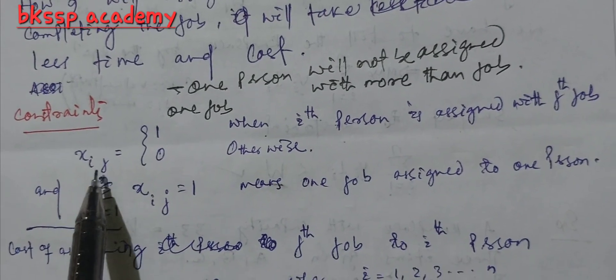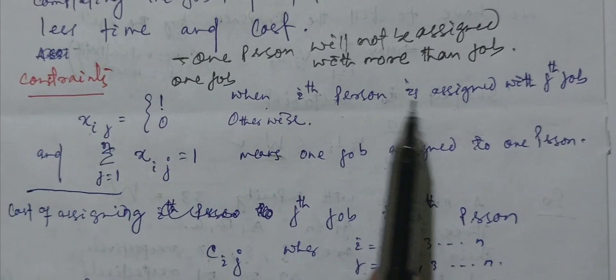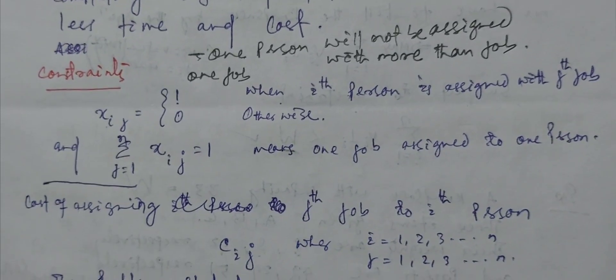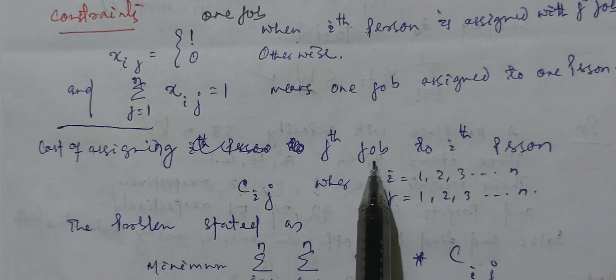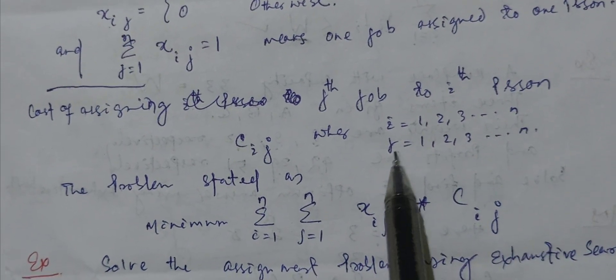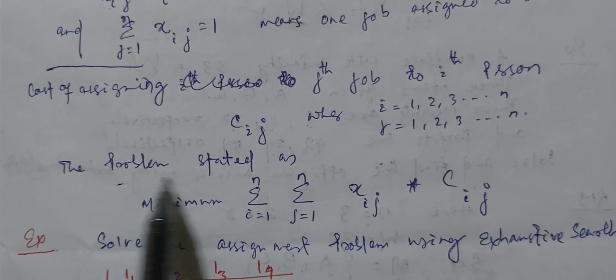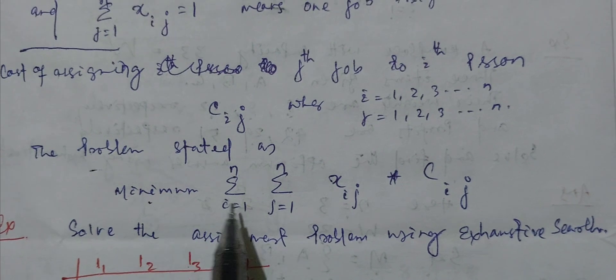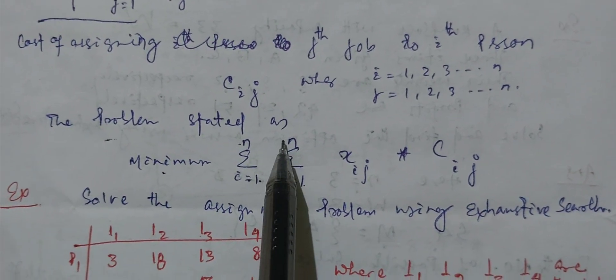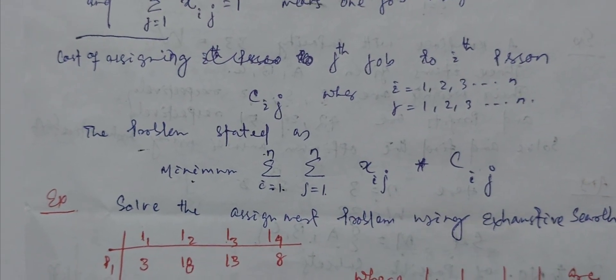So xij equals 1 when the ith person is assigned with the jth job, otherwise zero. Cost of assigning jth job to ith person where i equals 1 to n and j equals 1 to n. The problem states that minimize the sum from i equals 1 to n and j equals 1 to n of xij times cij. This is the formula.